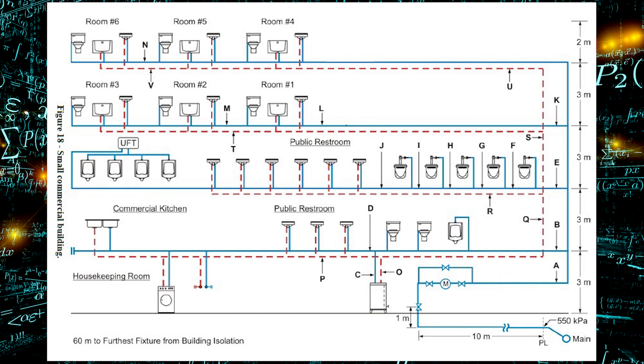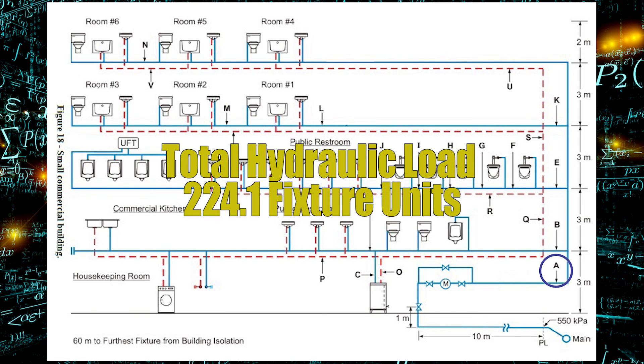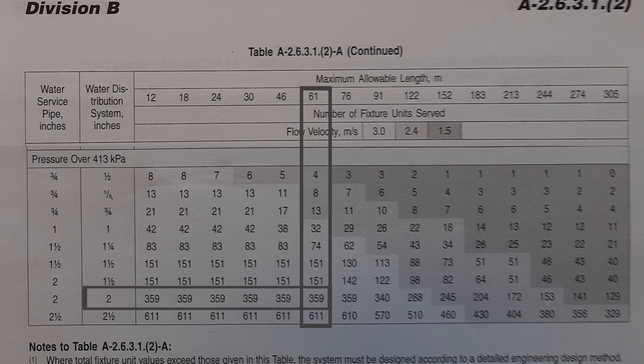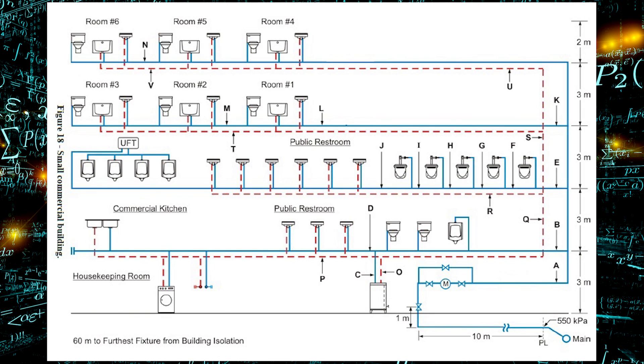Eventually I'm going to size up my cold water side. The cold water side is pretty simple. For example pipe A, we already know it's 224.1 fixture units. Let's go look in our table. It's the same developed length at 61 meters of maximum allowable length and we're going to notice that we get to two inch on our distribution which is once again 359 fixture units according to the table. That's perfectly adequate. Another example would be pipe N near the top.